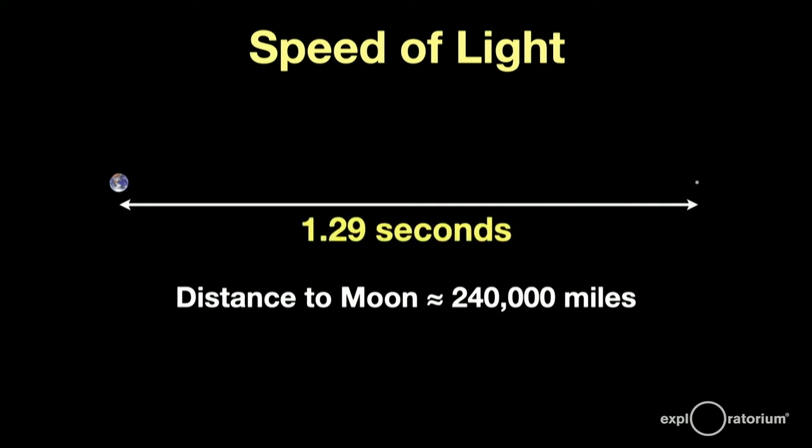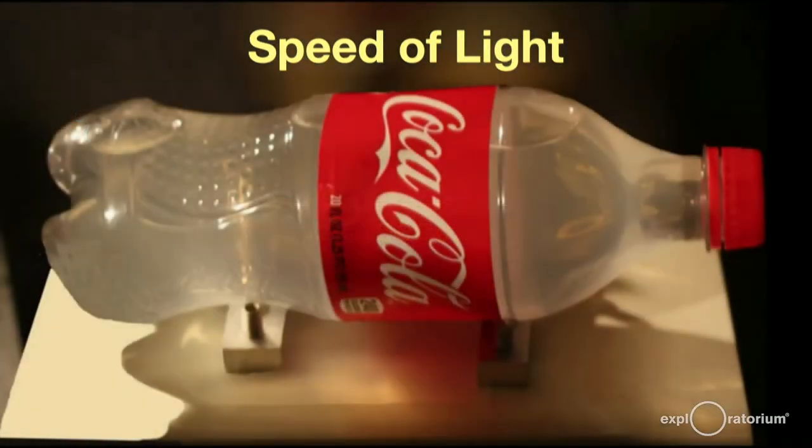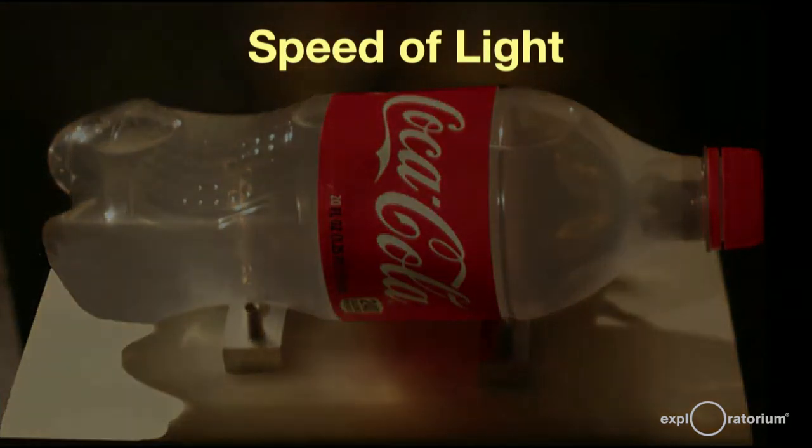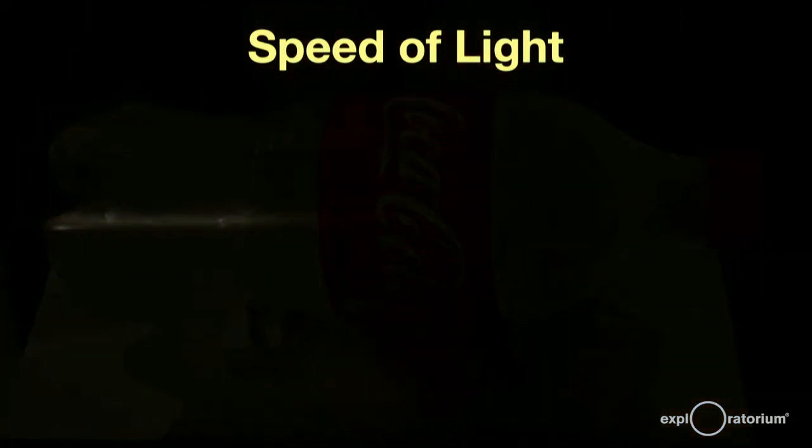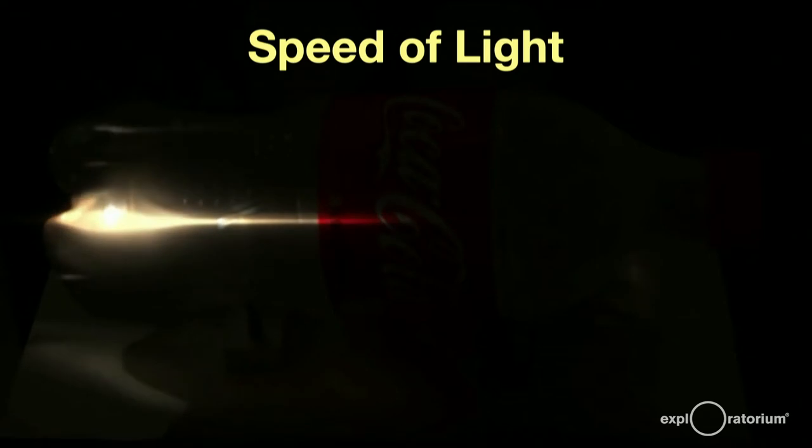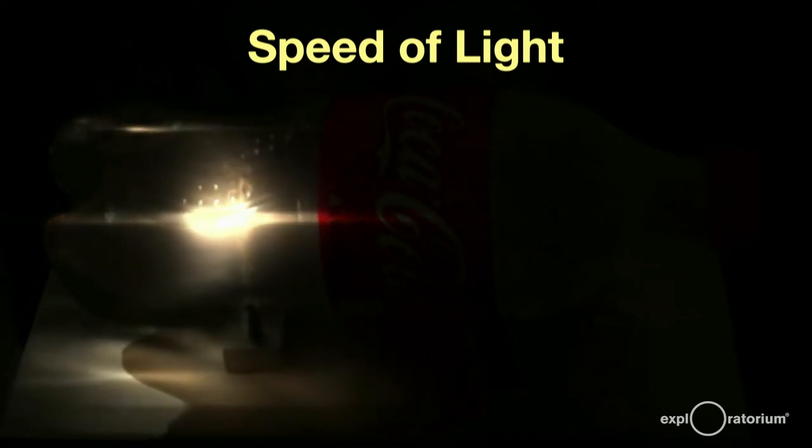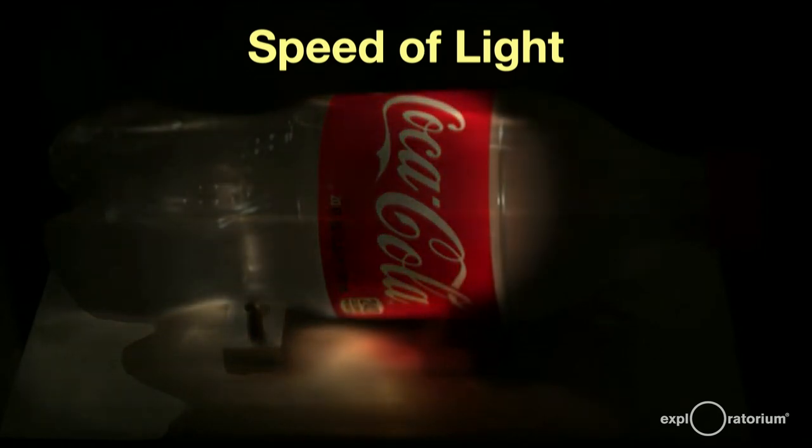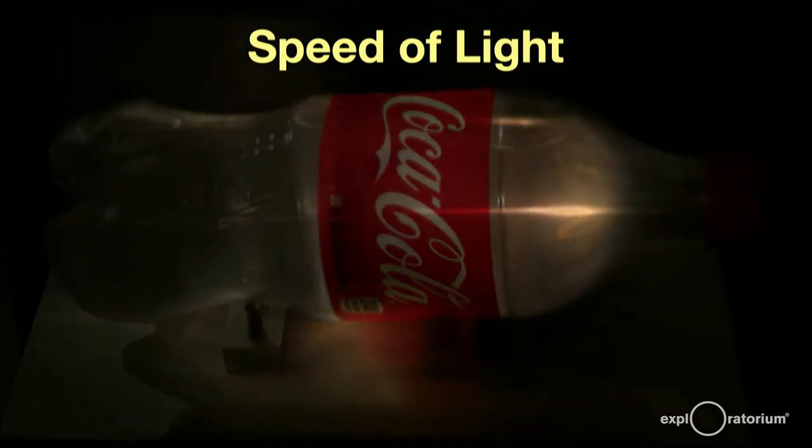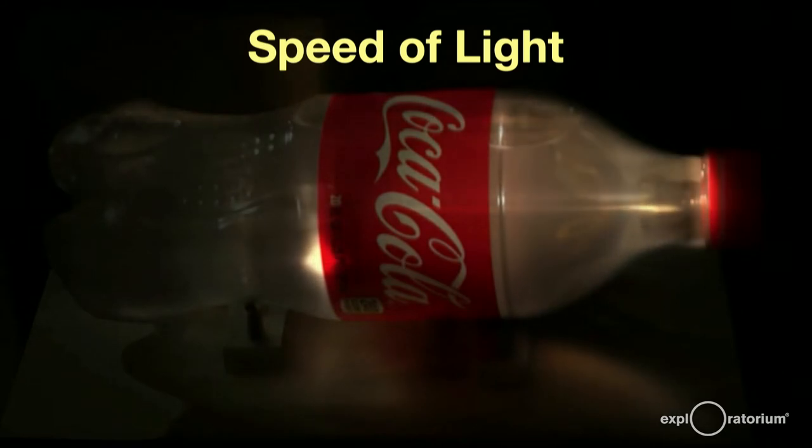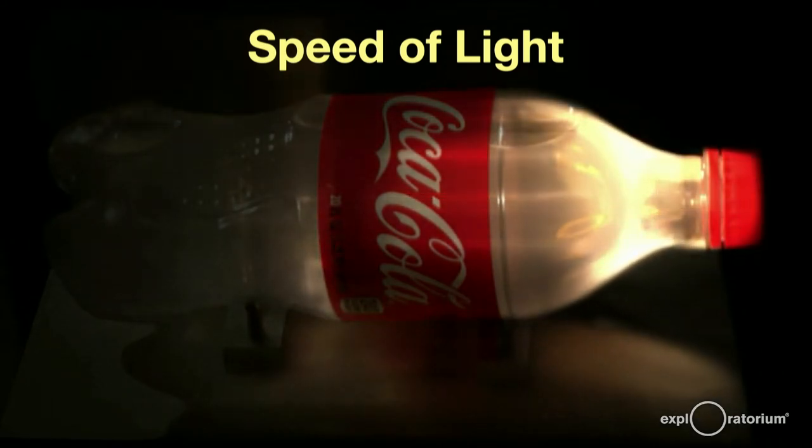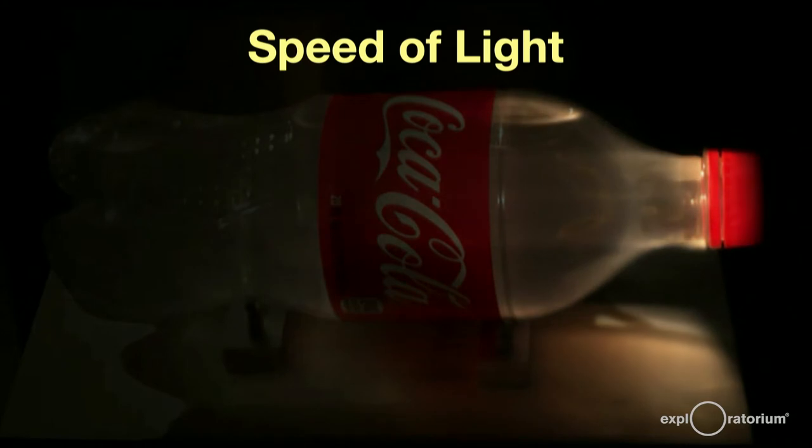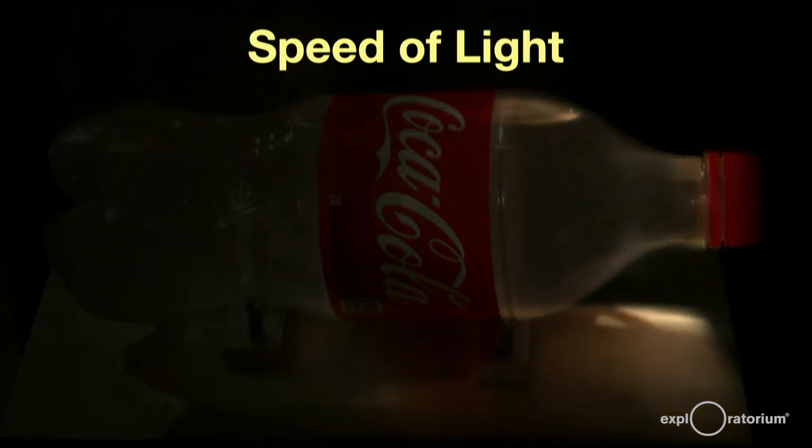Light takes only eight minutes to travel from the Sun to the Earth. Here you see an amazing high-tech movie of a pulse of laser light moving through a slightly milky water solution in a plastic bottle. Note that this normally takes less than a billionth of a second to happen and that the pulse of laser light is less than a tenth of a billionth of a second long. Light takes about a billionth of a second, a nanosecond, to travel one foot.